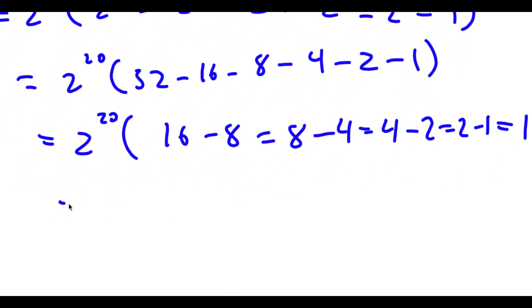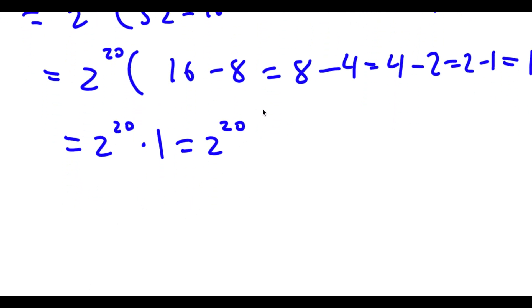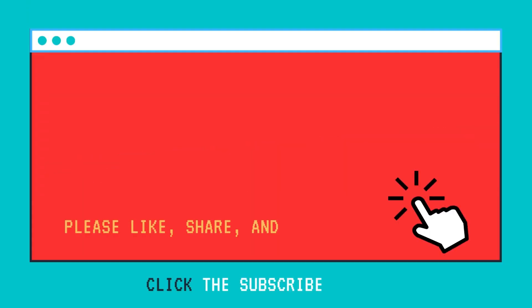So I have 2 to the power of 20 times 1, which is equal to 2 to the power of 20. So 2 to the power of 20 is our answer. Thank you!